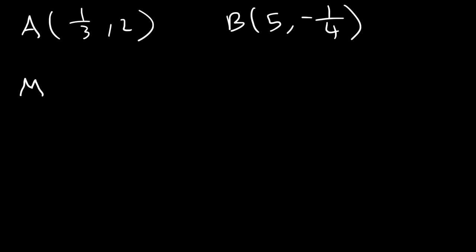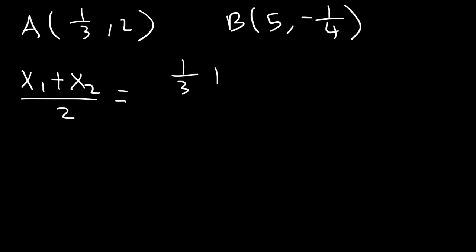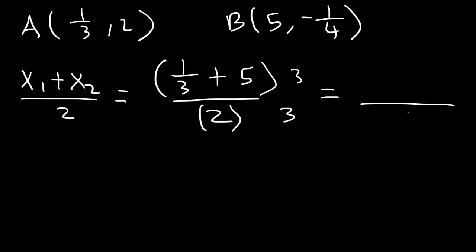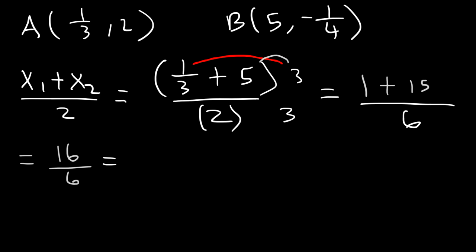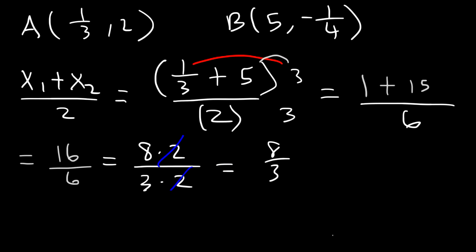Let's follow the same procedure, one step at a time. First, find the midpoint of the x-coordinate: x1 plus x2 divided by 2. So x1 is 1/3 and x2 is 5. To simplify this complex fraction, multiply the numerator and denominator by 3. The denominator becomes 6. On top, using the distributive property: 3 times 1/3 gives 1 (the 3s cancel), and 3 times 5 is 15. So 1 plus 15 is 16, giving 16/6. Simplifying: 16 = 8×2 and 6 = 3×2, so we cancel the 2, leaving 8/3. The x-coordinate of the midpoint is 8/3.